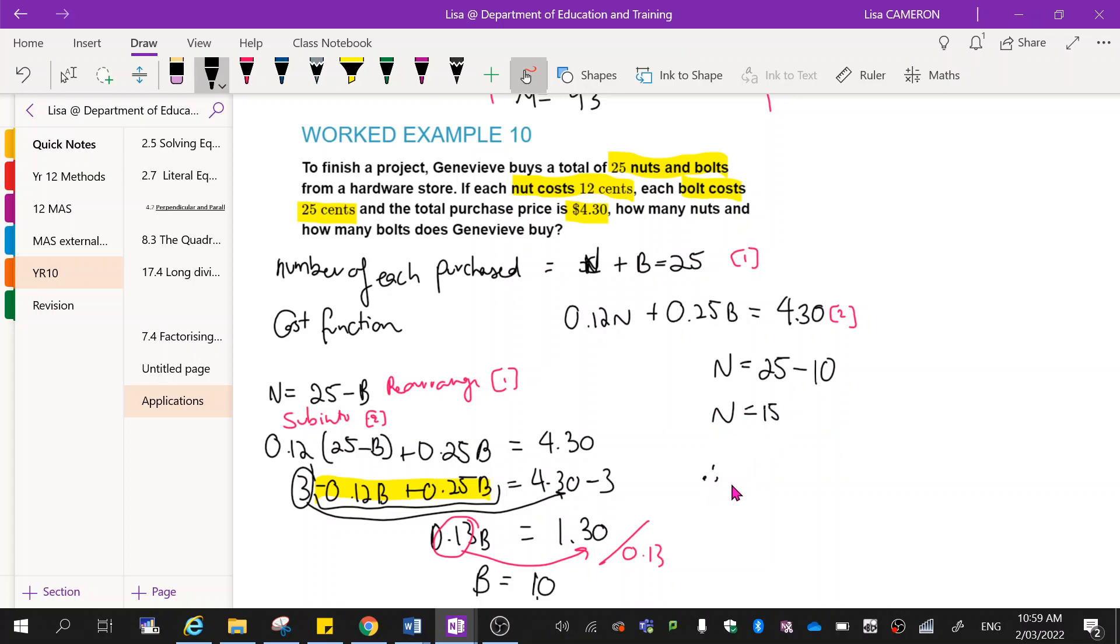So therefore, we purchase 15 nuts and 10 bolts. And that's it. Once you learn to deconstruct the questions, it's really not that hard of a skill. The problem is that you need to do a lot of practice of these to understand how it's easy to deconstruct the questions into a set of simultaneous equations.